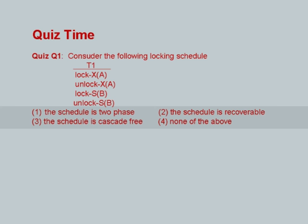Let us see the answer. First, is the schedule two-phase? Two-phase means once you release a lock you cannot acquire any more locks. But in this case, T1 has unlocked A and after that acquires a lock on B — so it is not two-phase. Is it recoverable? No — if somebody read A after the unlock, and that person committed, it is not recoverable. Is it cascade-free? No — if it is not recoverable, it is not cascade-free. So the answer is option 4: none of the above.